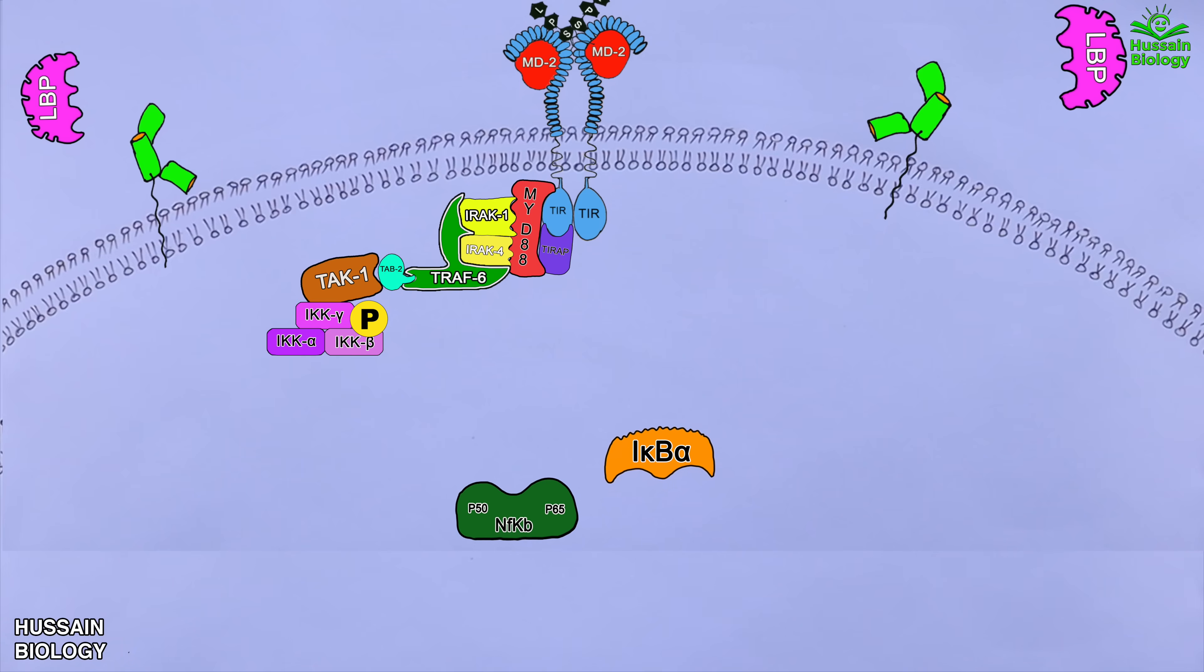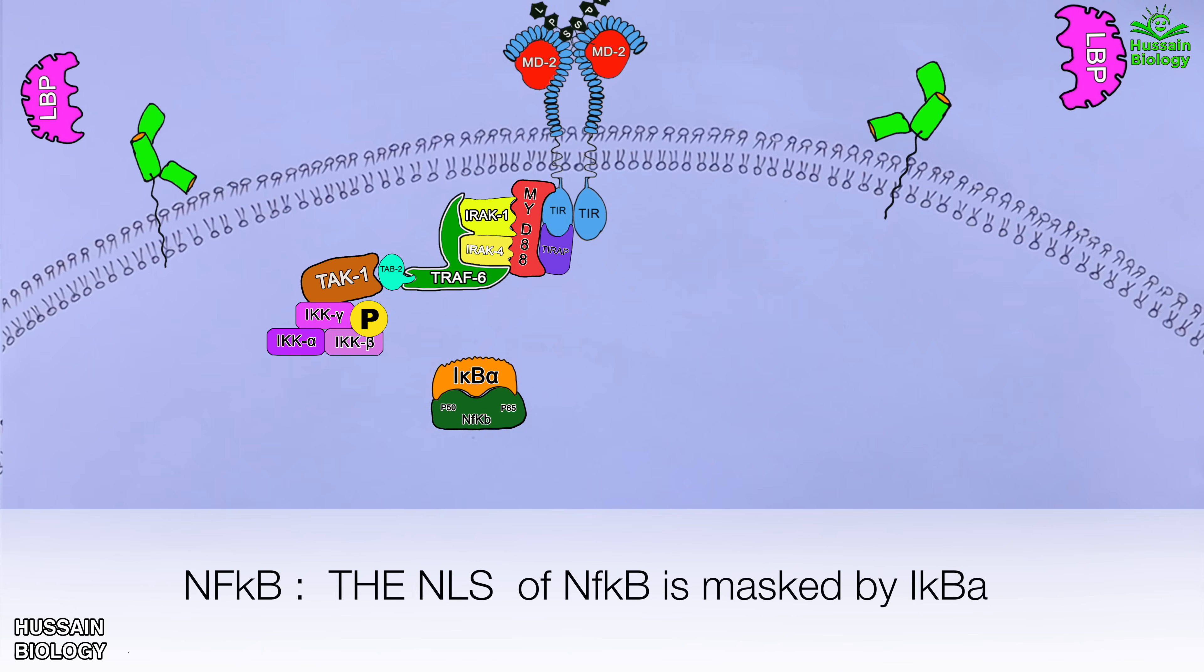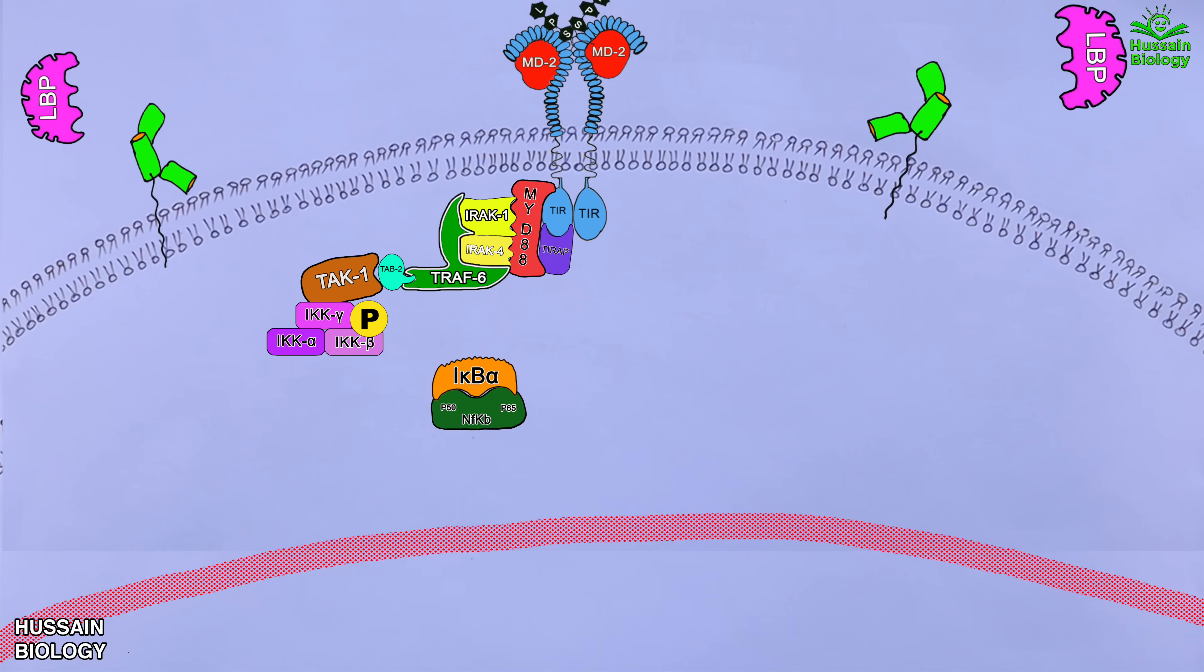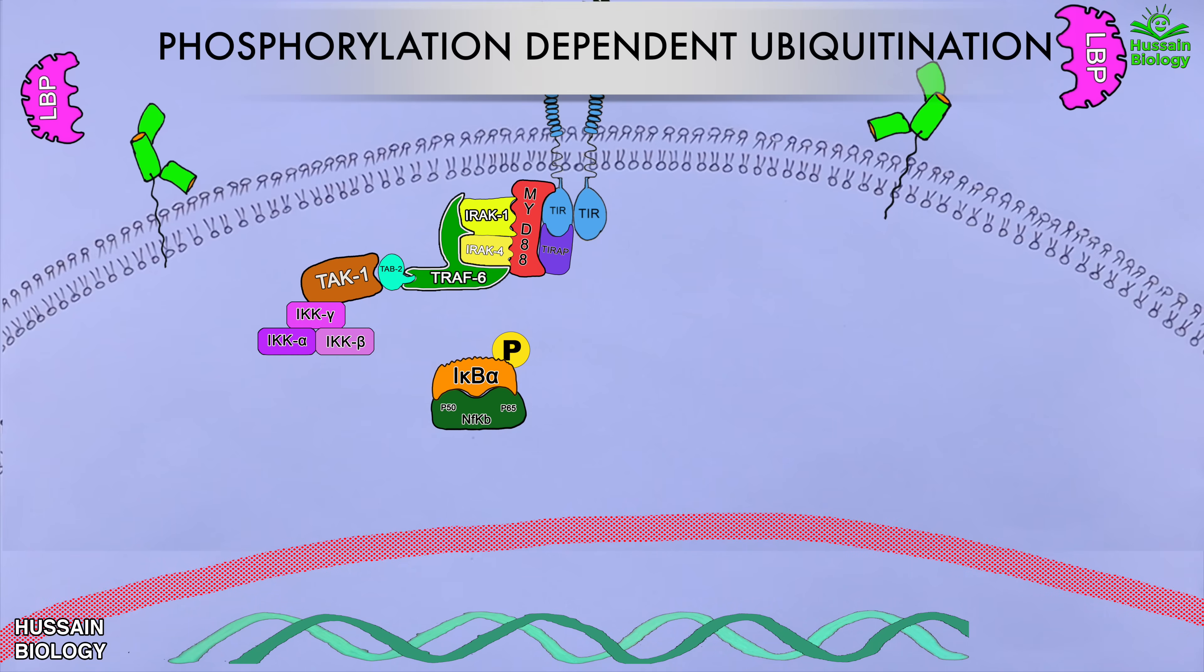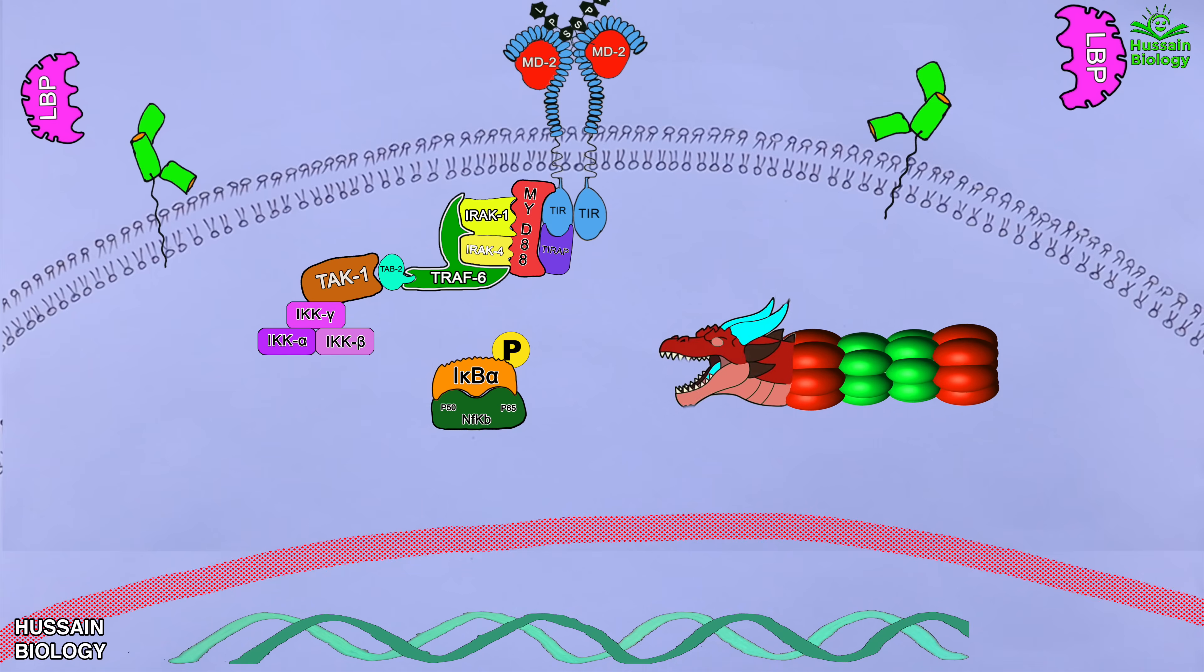On the other hand we see NFKB protein associated with IKBA protein. This IKBA masks the nuclear localization signal of NFKB protein with which NFKB is not able to get into the nucleus. So to free the NFKB from IKBA protein we have just activated the IKK protein. This IKK protein phosphorylates the IKBA protein and marks it for degradation. In that way IKBA protein is degraded by proteasomes. Now from here the NFKB is free to go into the nucleus as its NLS signal has been unmasked.